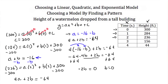So I found b = 0. Plugging that back in, a = -16 - 0 = -16. So my quadratic equation is y = -16x² + 300.